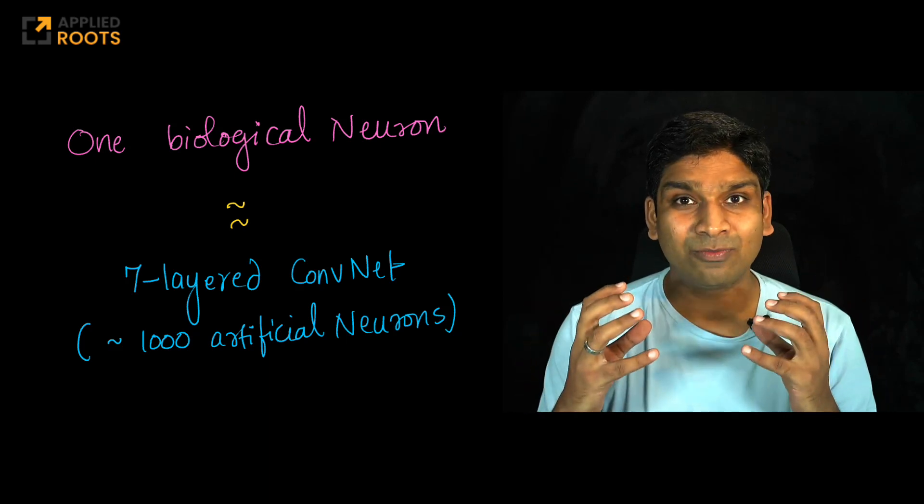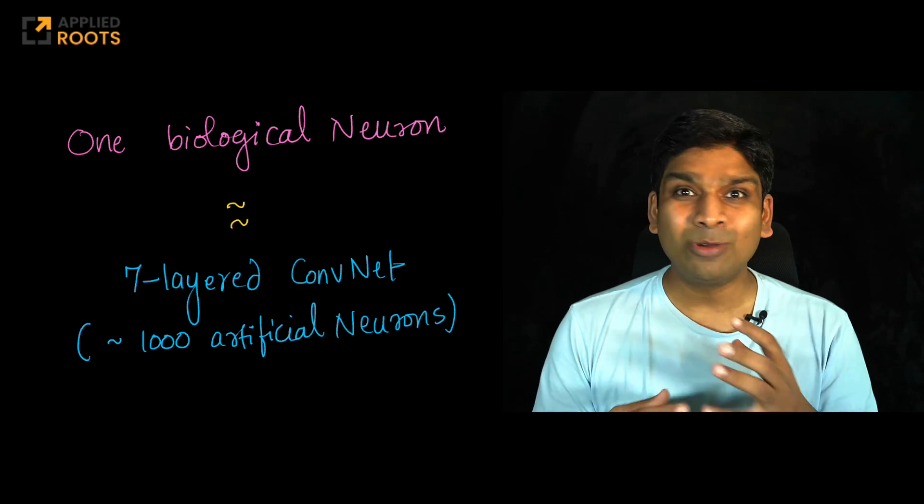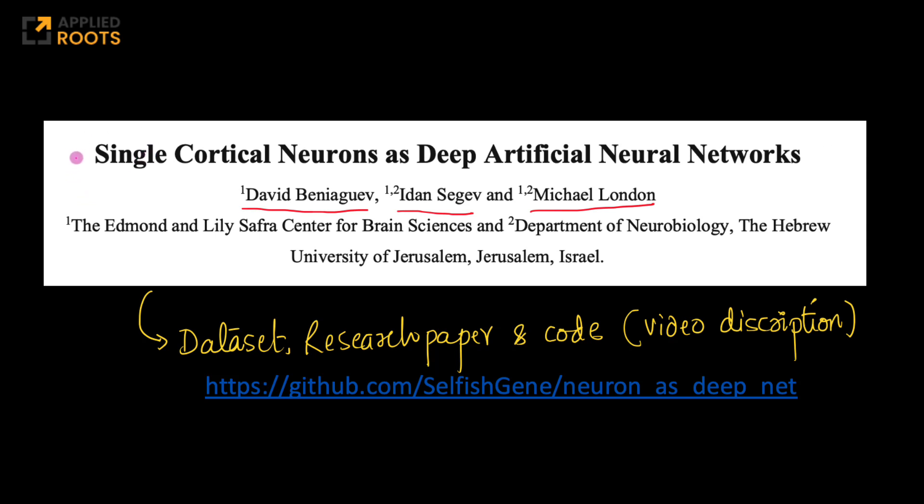This is a very interesting research from the Hebrew University. They tried to understand what is the equivalent architecture for one cortical neuron. After a lot of experimentation, they have shown that one single cortical biological neuron is approximately equal to a seven-layered convolutional network with approximately about a thousand neurons. This is a research paper titled Single Cortical Neurons as Deep Artificial Neural Networks by David Beniaguev, Idan Segev and Michael London, from the Center of Brain Sciences and Department of Neurobiology at the Hebrew University of Jerusalem. You can find all of this in their GitHub profile at github.com/SelfishGene/neuron_as_deep_net.